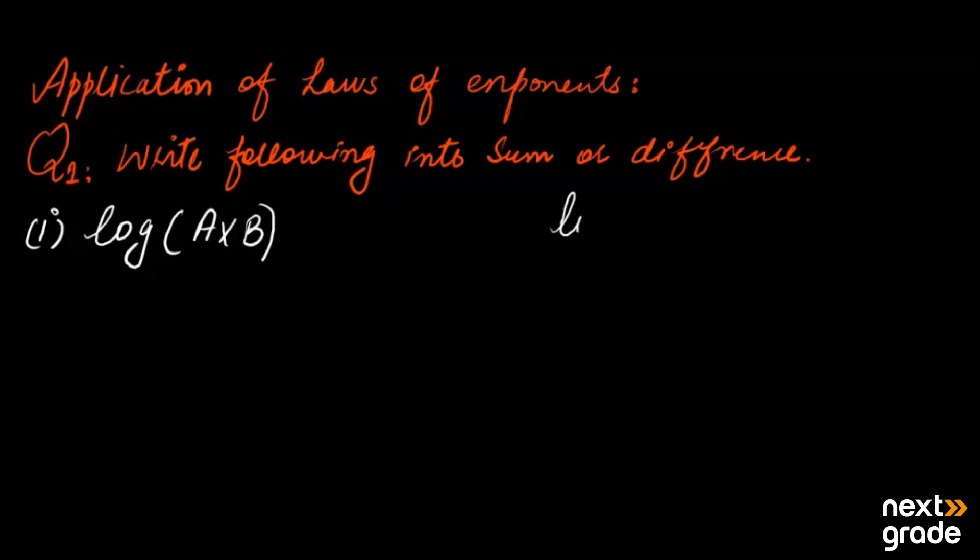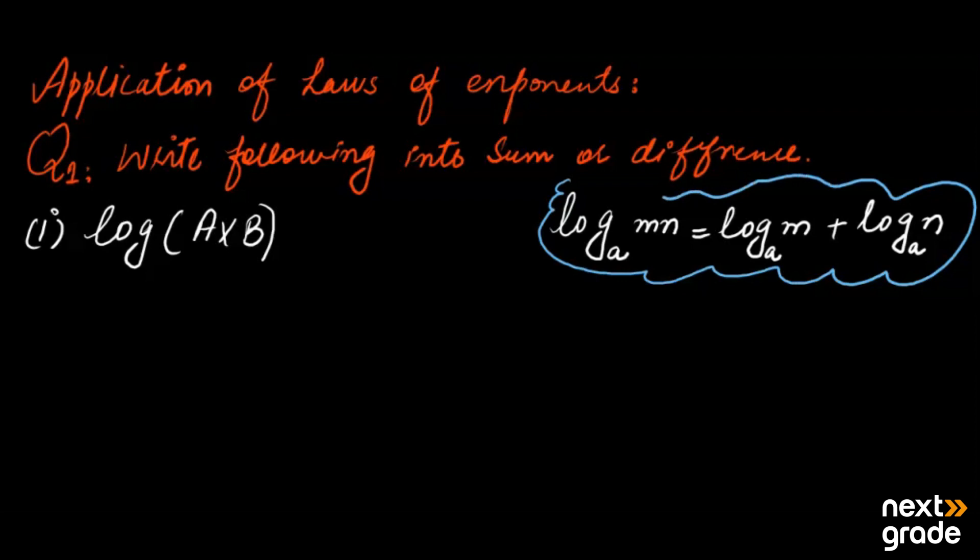Now we have discussed the property in the previous lecture. If we take log of MN, there are two numbers which are multiplied. In those numbers, the base will be defined. So we can apply log to these numbers with a plus sign. The base will be A. This is the property that we have used—this is the addition property.